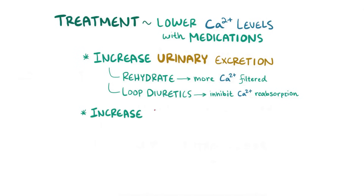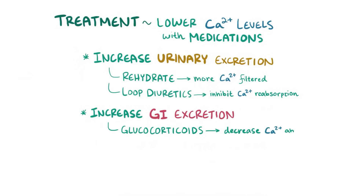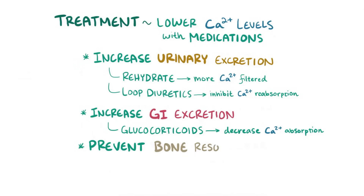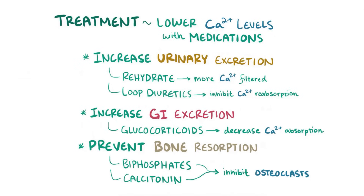Another approach is to increase gastrointestinal excretion by using glucocorticoids to decrease intestinal calcium absorption, which allows it to simply pass through the gut without getting absorbed. Finally, you can prevent bone resorption by using bisphosphonates or calcitonin to inhibit osteoclasts.